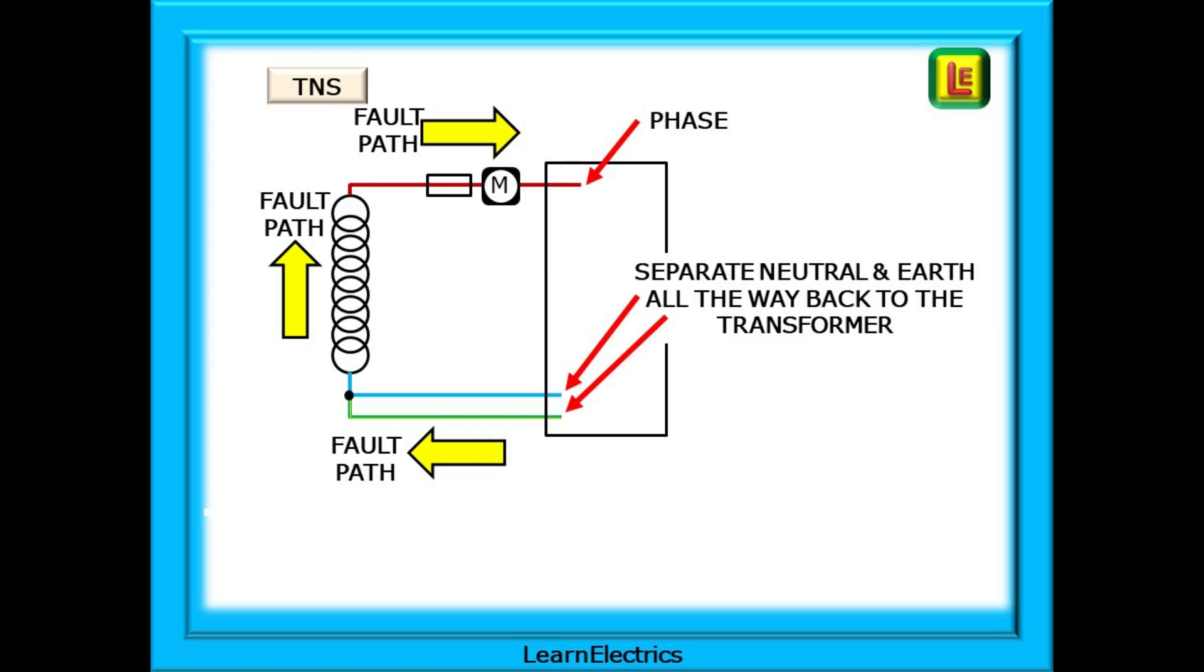This is important, because, if the fault current did not flow along the phase wire, and back through the fuses, then the fuse would not blow, or the breaker would not trip. No flow through the fuse, and the fuse won't blow. When the fuse or breaker operates, the fault current will stop, and the installation will be in a failed safe condition, awaiting repair.